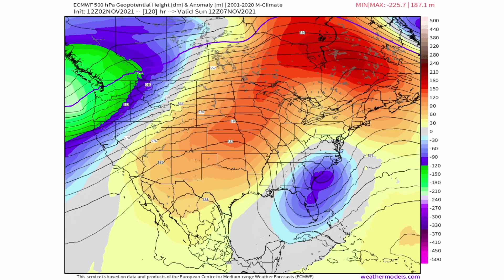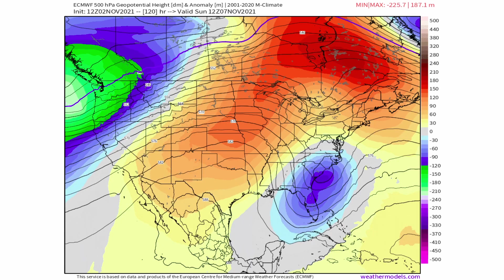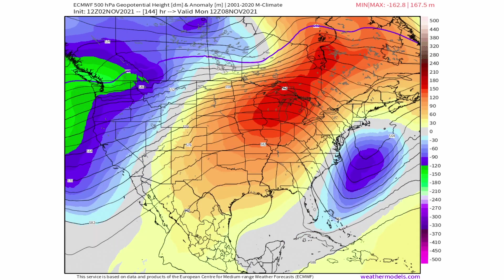Some people get caught up with being in the blue or deep red shading, but really that's not all that important. You could be in a deep red shade, but if your source of air is coming in from northern Canada, it really doesn't matter — either way, you will be on the colder side of things.